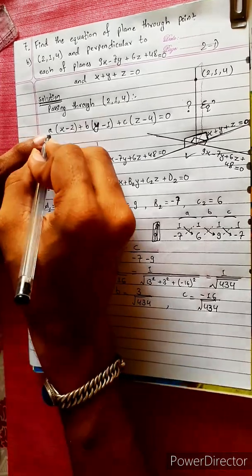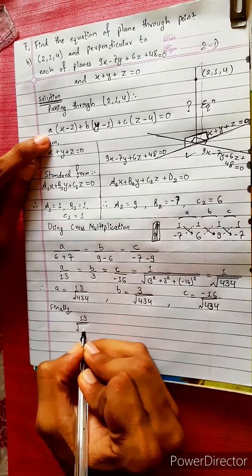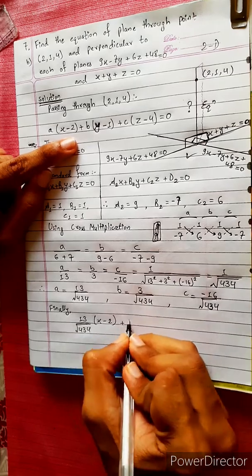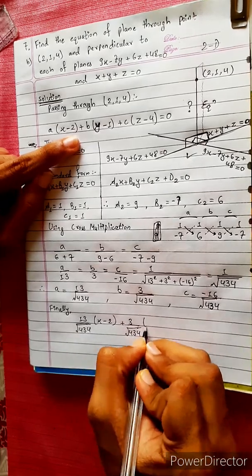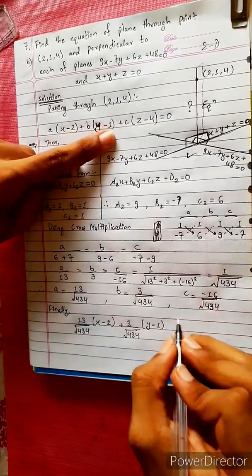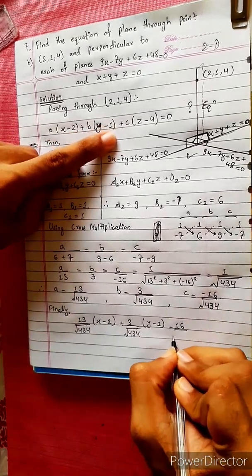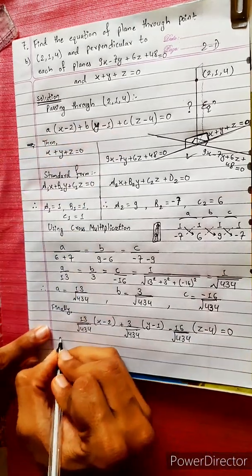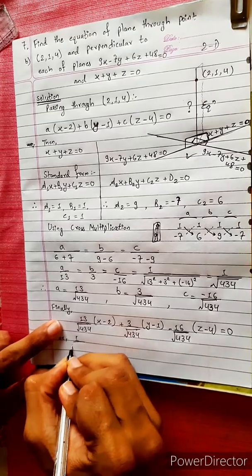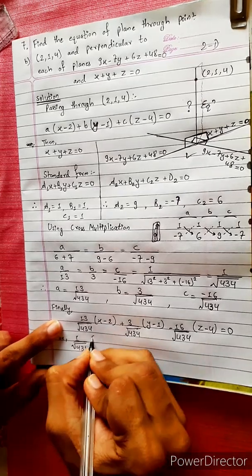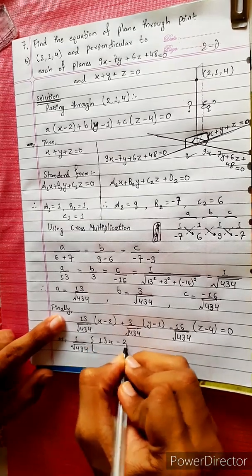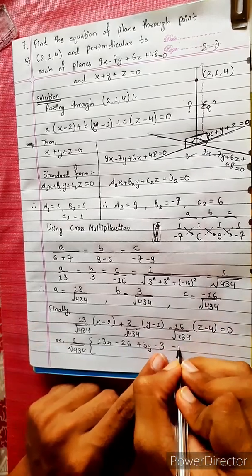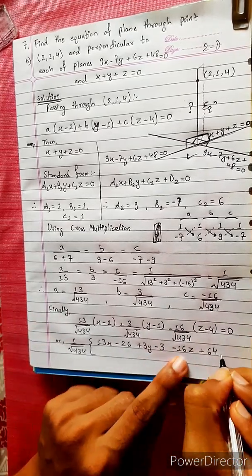The basic function is 13 divided by root 434. So the equation is: 13 by root 434 times (x minus 2) plus 3 by root 434 times (y minus 1) minus 16 divided by root 434 times (z minus 4) equals 0. Taking root 434 as common, we get: 13x minus 26 plus 3y minus 3 minus 16z plus 64 equals 0.